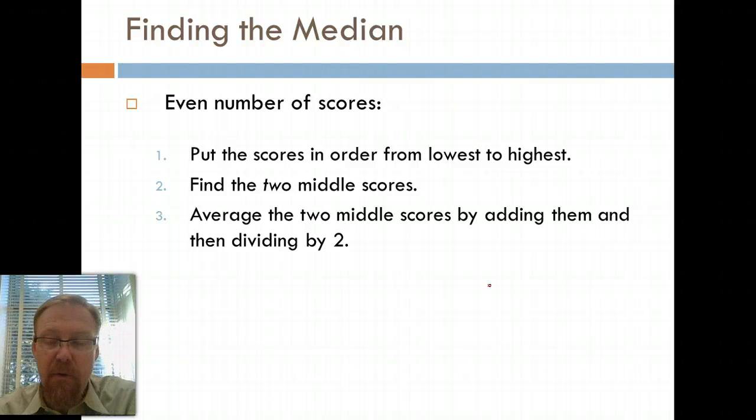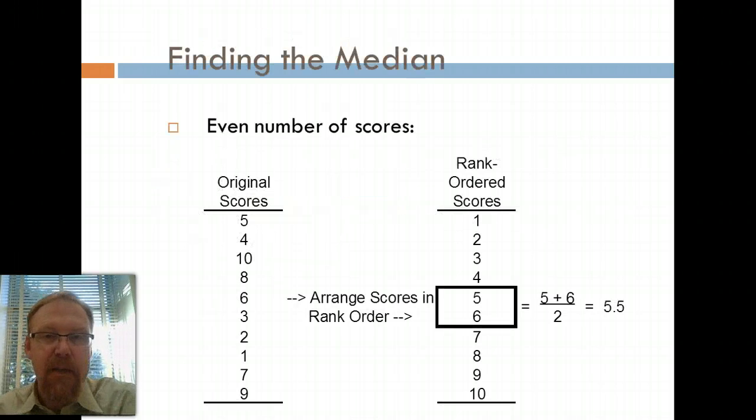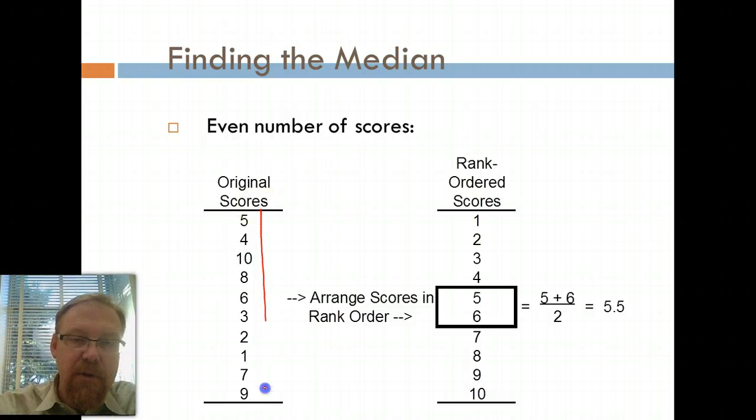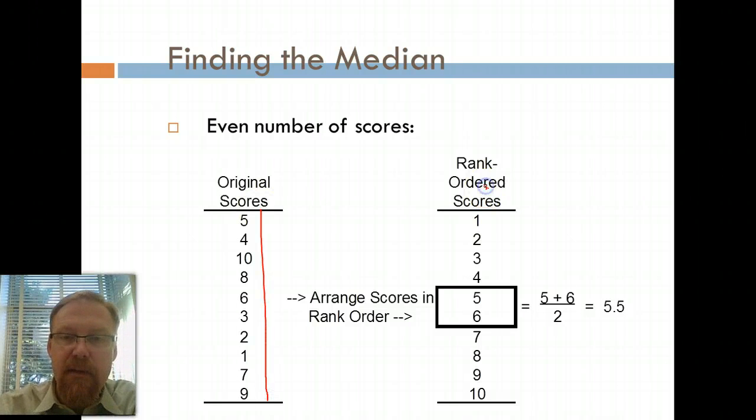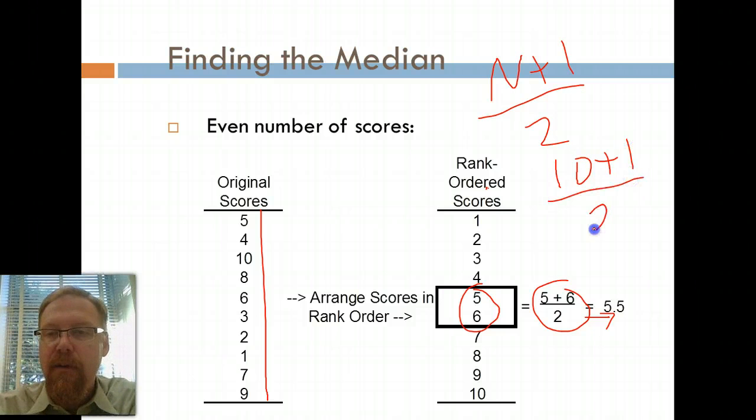If you have an even number of scores, it becomes a little fuzzier. But it's the same sort of approach. You put the scores in order from lowest to highest and find the two middle scores. And then if you want to find the exact median, even if they're whole numbers in the set of variables, you can average the two middle scores by adding them and then dividing by two. So for example, if you have an even number of scores, you rank order, which we've done over on this side, and then you find the two middle scores, average them, and voila. You could also do the trick from before: N plus one divided by two. So that would be ten plus one, which is eleven, divided by two. Eleven divided by two is five and a half.